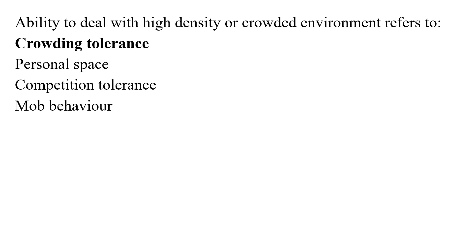In this question they ask: the ability to deal with a high-density or crowded environment is called — option one is crowding tolerance, option two is personal space, option three is competition tolerance, and option four is mob behavior.